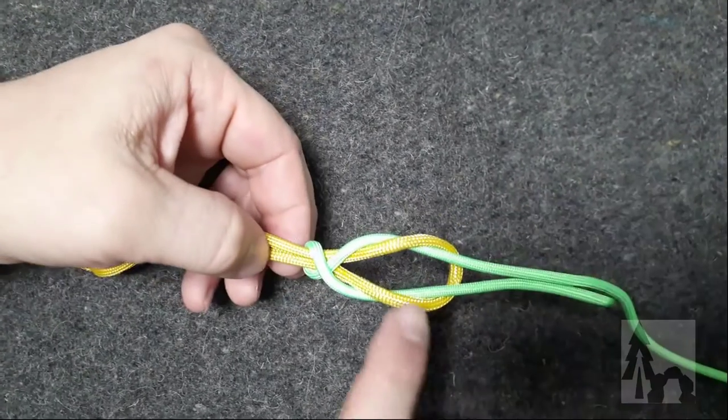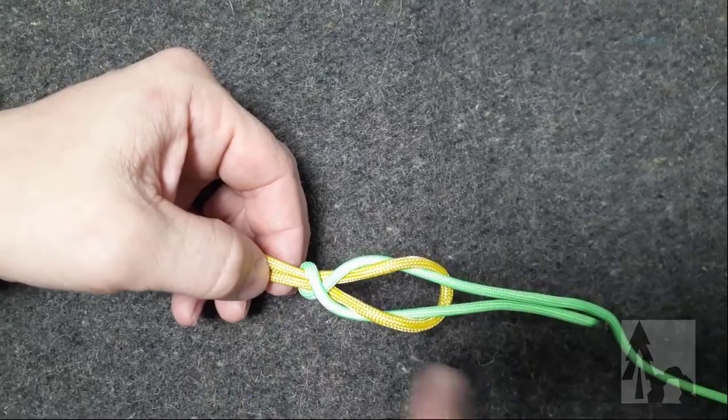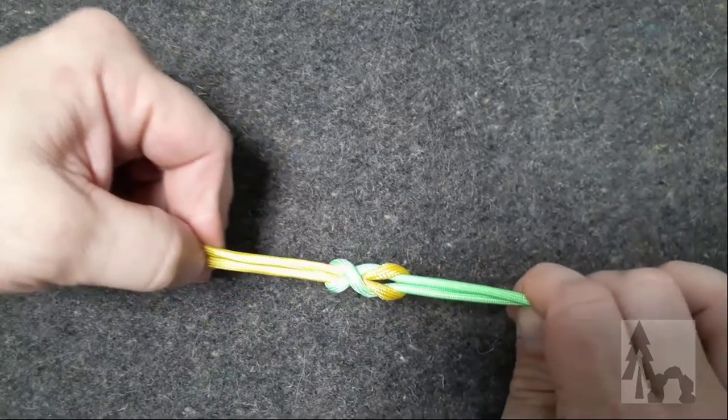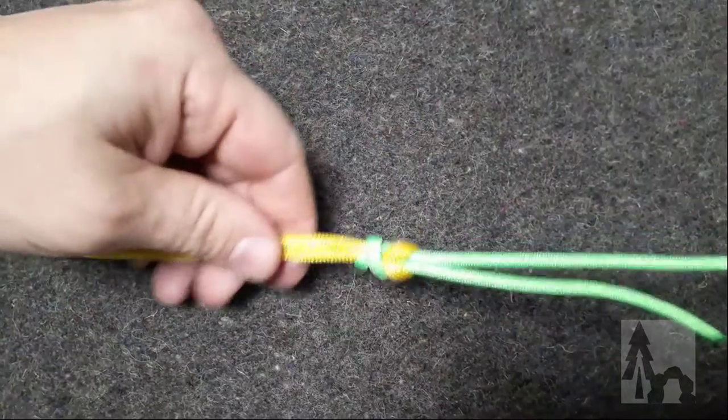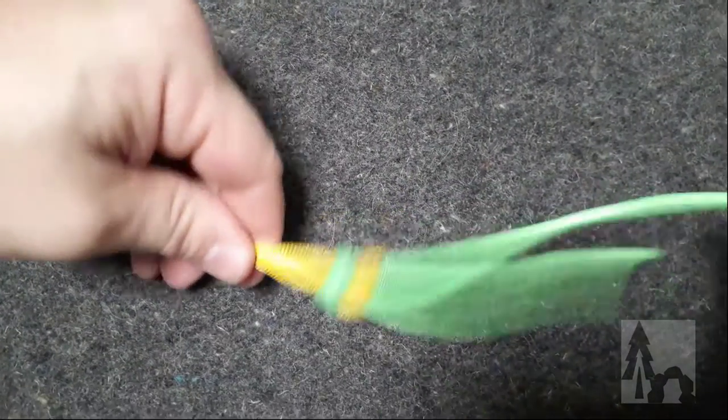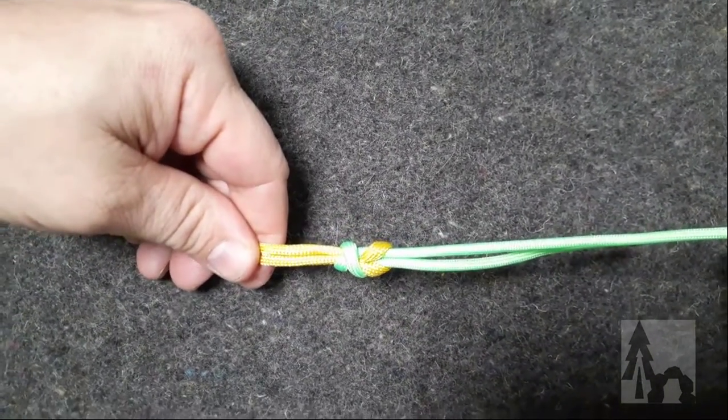So those two lines come in and I've made a wrap around that loop. And then when I pull this thing tight, now I've got a great hold on that loop, a good bend that won't collapse even under a lot of pressure.